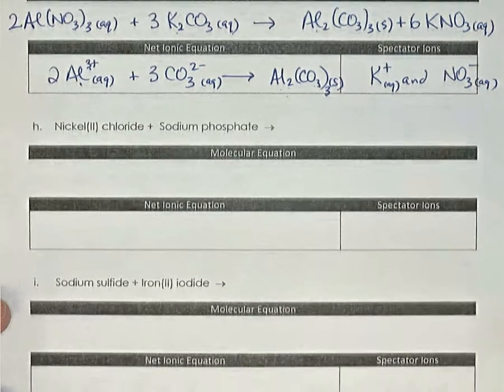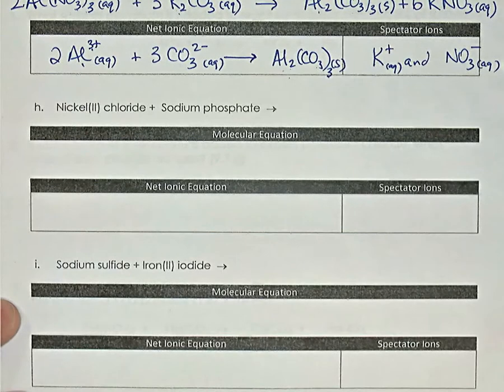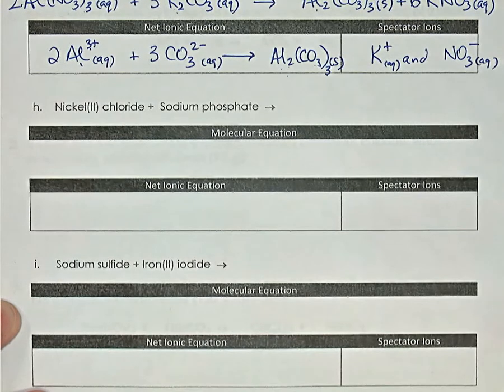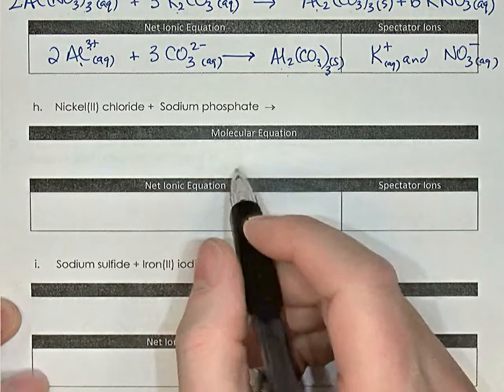Let's try this one a little faster: nickel chloride reacts with sodium phosphate. Again it's a double replacement reaction.